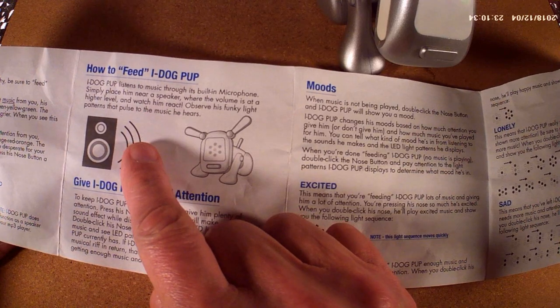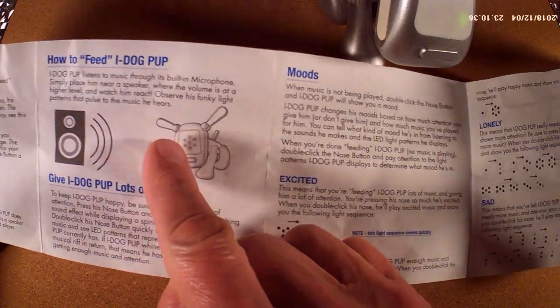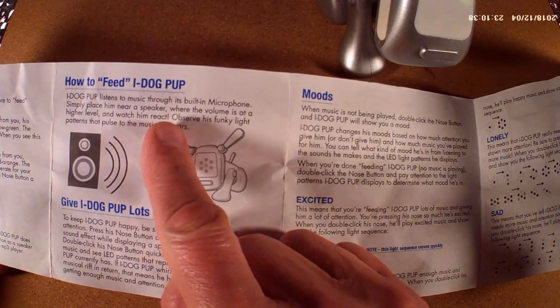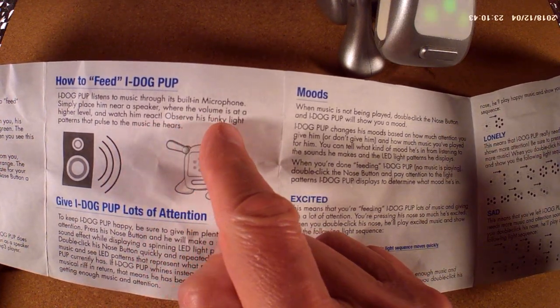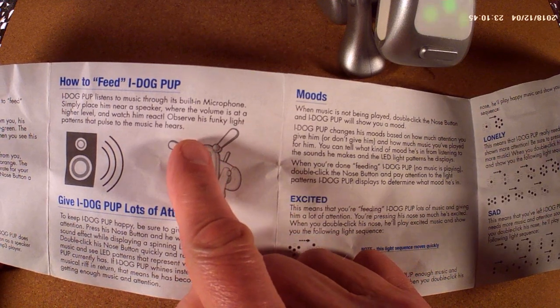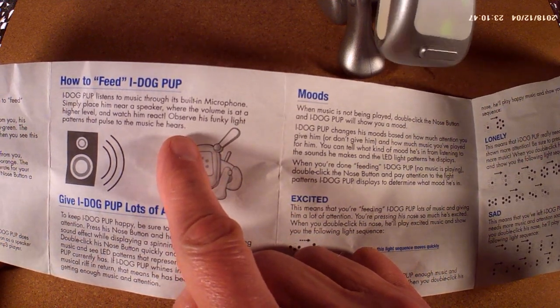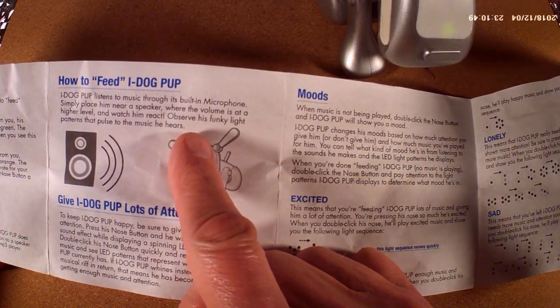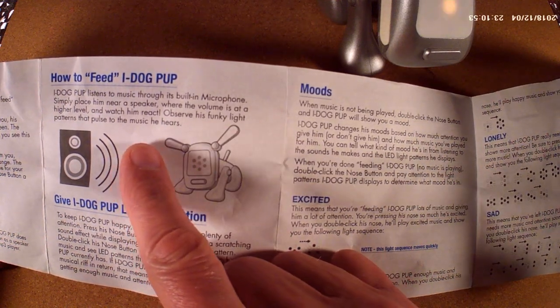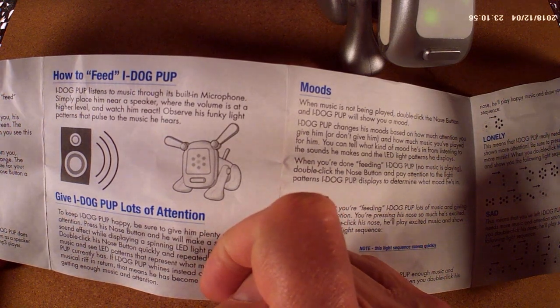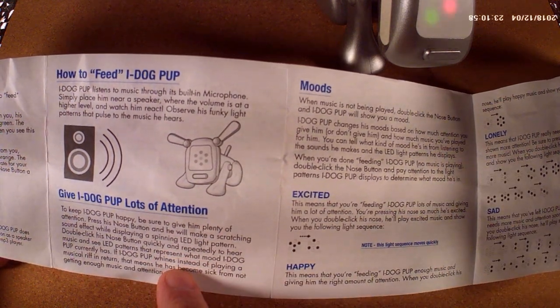But we feed him music. He listens to music through his built-in microphone. Simply place him near a speaker where the volume is at high level and watch him react. Observe his funky light patterns that pulse to the music he hears.